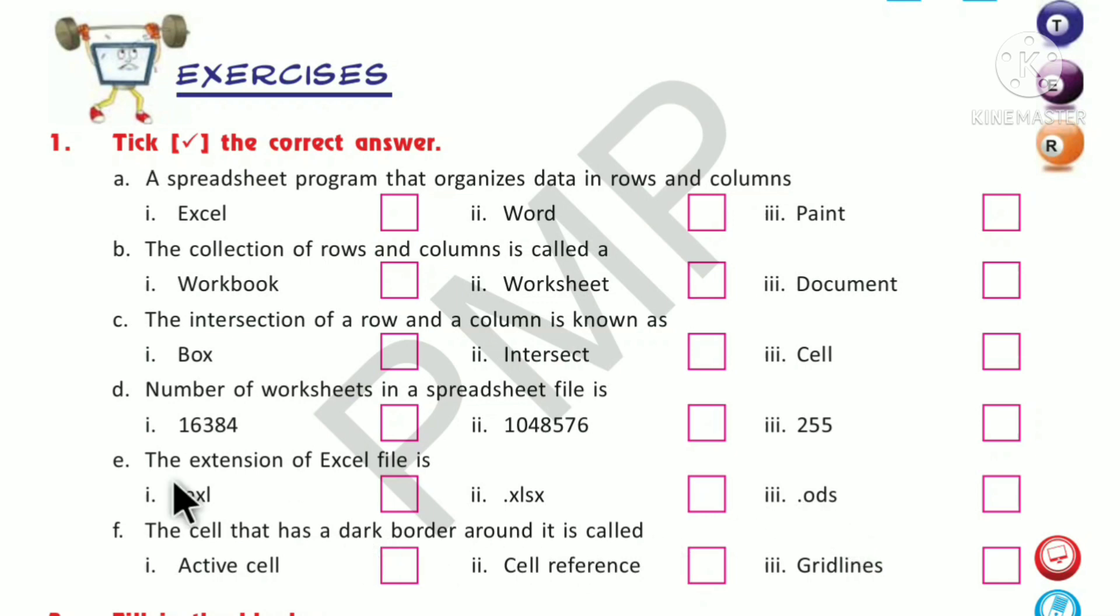Question F: The cell that has a dark border around it is called active cell, cell reference, or gridlines? That is active cell. Tick here. See the answers.